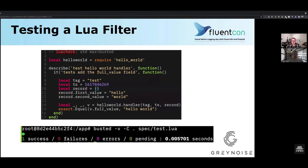In GrayNoise, we actually have tests for the FluentBit plugins we've written. We want to show you how to write a very simple test using the Busted Lua testing framework. This is BDD, so if you've ever written BDD tests this looks very familiar. If you've written Ginkgo in Go, it's super familiar — it looks more or less the same with some nuances.